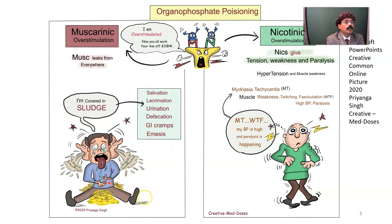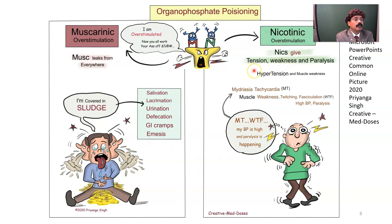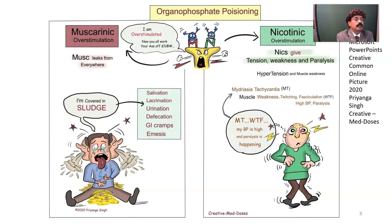For nicotinic action, there will be tension, weakness, and paralysis. There will be weakness, twitching, and fasciculation due to excessive neuromuscular stimulation. High blood pressure occurs from sympathetic stimulation, and the dilator pupillae will be more active, so the pupils will be dilated — mydriasis — along with high blood pressure. These are due to nicotinic stimulation.